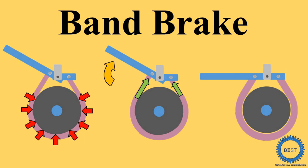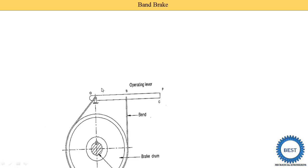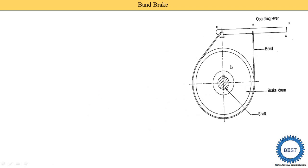In this video I explain band brake. Here you see this is the diagram of the band brake. This is the brake drum, and this is the shaft. On the shaft, the brake drum is mounted. This is the band with friction lining.